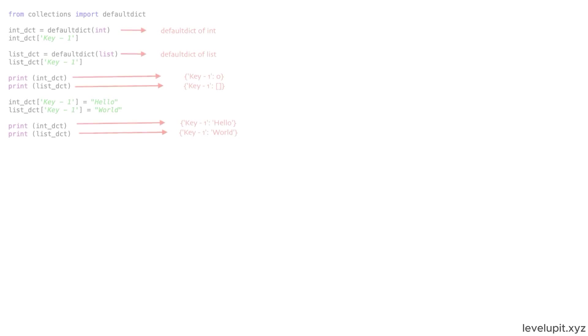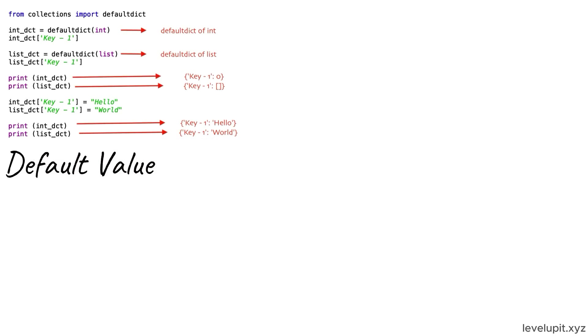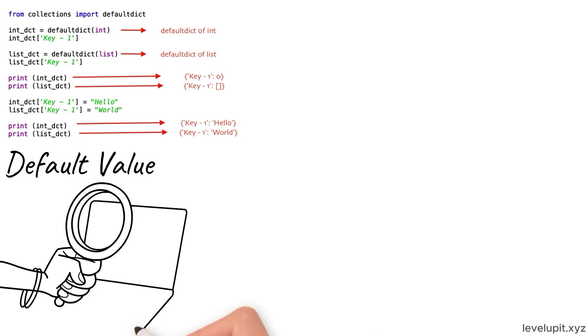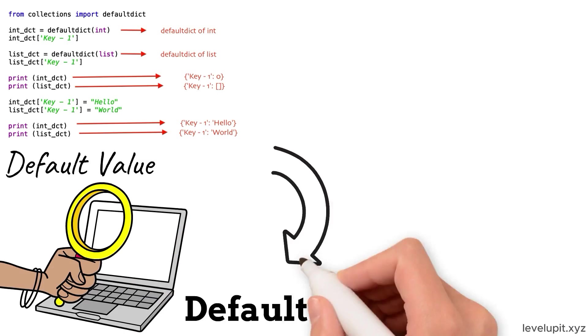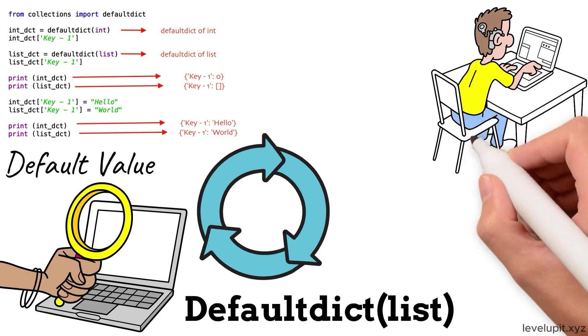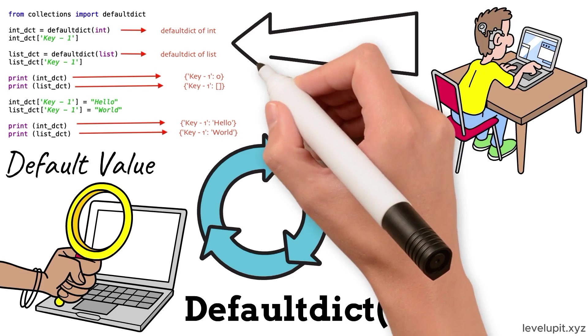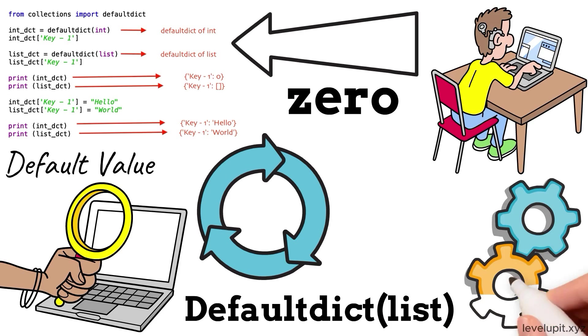defaultdict removes the need to set up dictionary keys before using them. It creates a default value for a missing key the first time it's accessed. If you're grouping comments by user, a defaultdict of list will create an empty list automatically, and then you append the comment. If you're counting events by type, a defaultdict of int starts counts at zero, so you can just add. This simple change reduces boilerplate and keeps the core logic front and center.